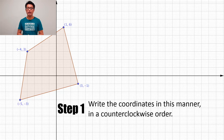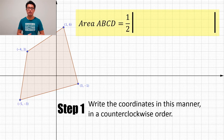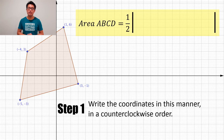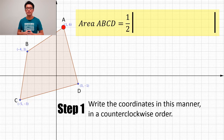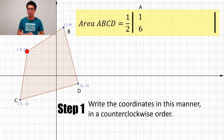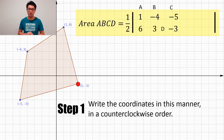Step one: we express the formula using half and a large modulus function, listing the coordinates in an anti-clockwise manner. For ease of reference, we let (1, 6) be A, then go anti-clockwise labeling the vertices as B, C, and D respectively. We start with A, placing (1, 6) in a column, then move to B which is (-4, 3), and so on until we complete one full cycle back to A, which is (1, 6).